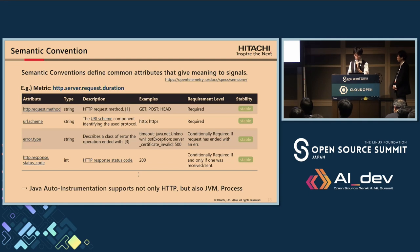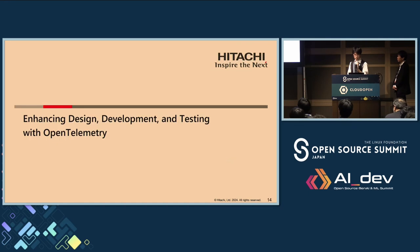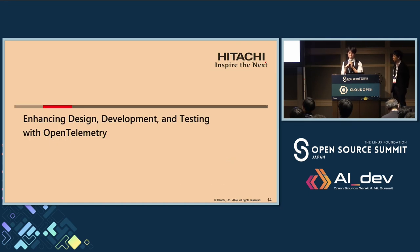The scope of analysis depends on what conventions the auto-instrumentation tool supports. Java, for example, supports information about JVM and processes, which is very useful. In the next section, Nakashima will introduce our work and practice using OTEL.